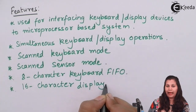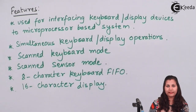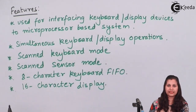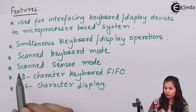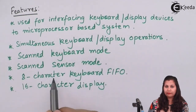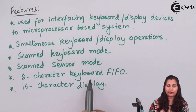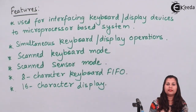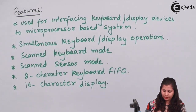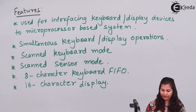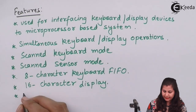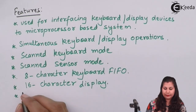Similarly, there is also a RAM for the display devices, which is 16 characters, meaning 16 bytes. So 8 bytes can be stored in the keyboard RAM and 16 characters can be stored in the display RAM. Another feature of the 8279 is right or left entry into the 16-byte display RAM.